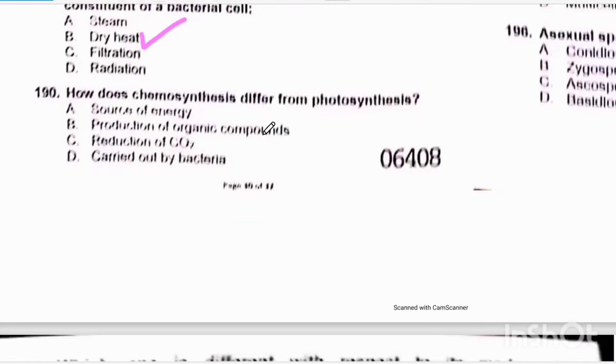How does chemosynthesis differ from photosynthesis? The source of energy is different. The production of organic compounds and reduction of carbon dioxide are carried out by bacteria. In photosynthesis the source of energy is light, and in chemosynthesis the source of energy is different chemicals.